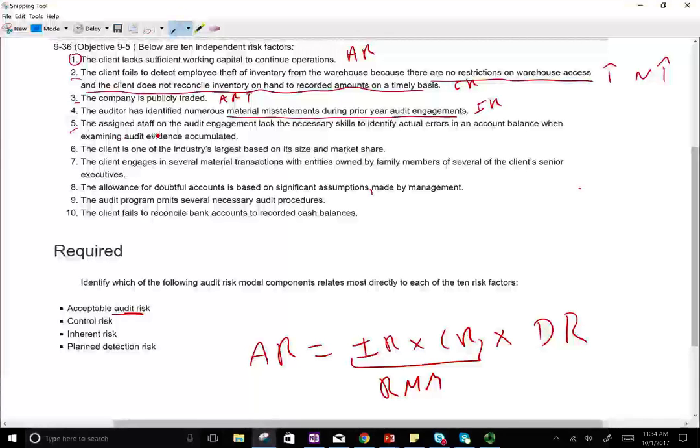Five, the assigned staff on the audit engagement lack the necessary skills to identify actual errors in an account balance when examining audit evidence. We are sending people that are not really qualified. If they're not qualified, they are going to miss the misstatement. This is going to affect our detection risk.